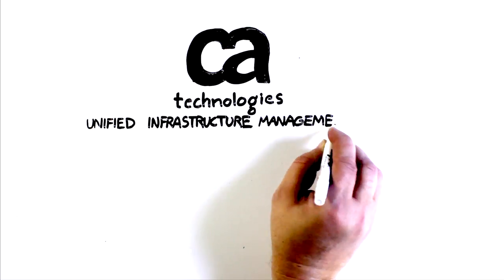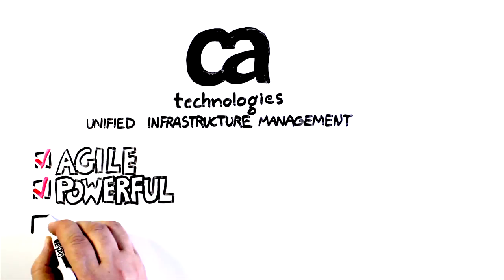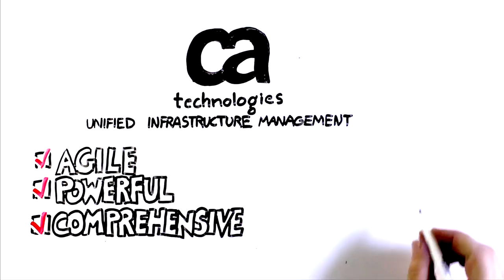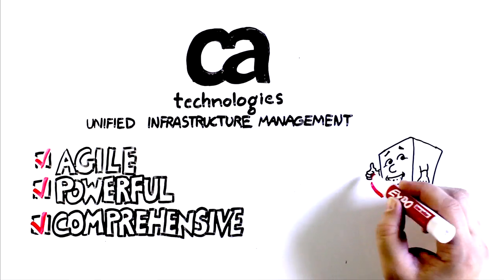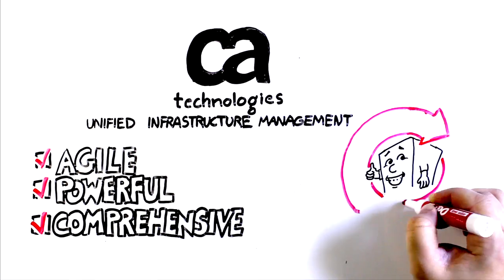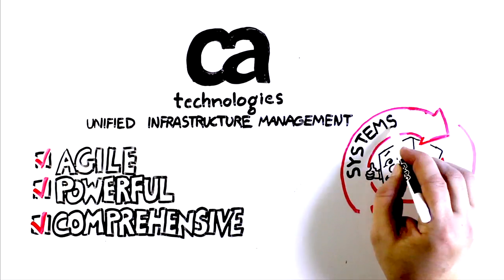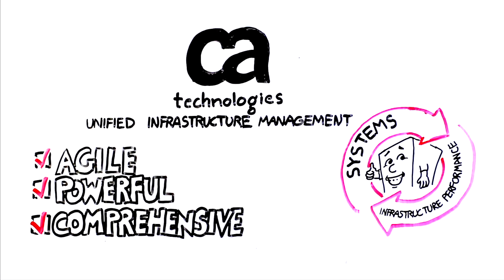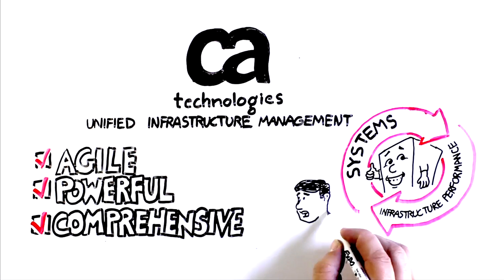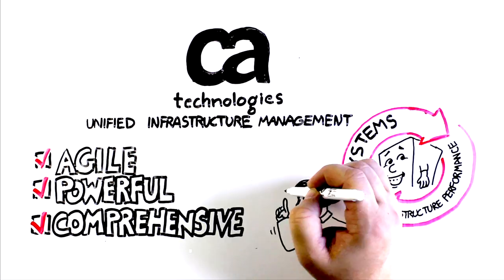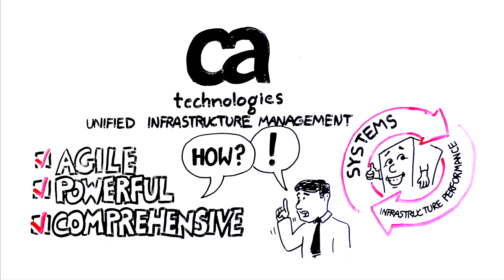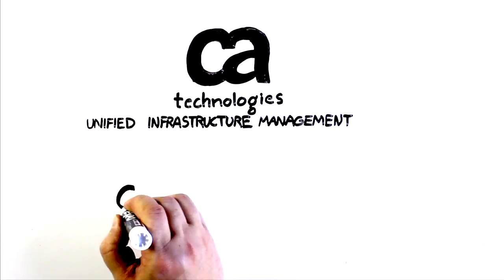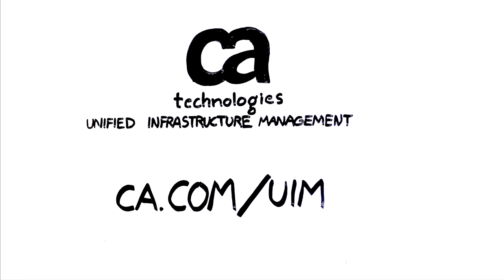Bottom line? CA's Unified Infrastructure Management is an agile, powerful, and comprehensive IT monitoring solution with an extremely lightweight footprint that gives you 360-degree visibility into systems and infrastructure performance. So the next time a vendor says something wonderful about what their monitoring solution does, remember to ask them how. To learn more, please visit ca.com/UIM.